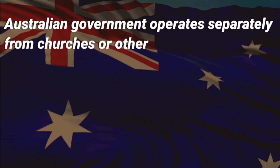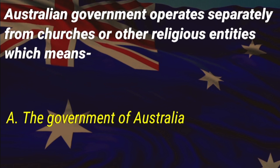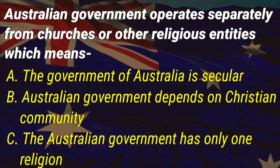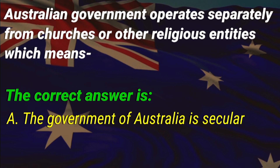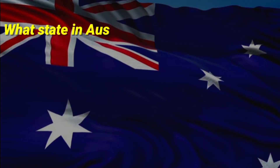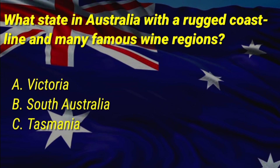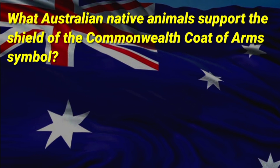The Australian government operates separately from churches or other religious entities, which means what? A: the government of Australia is secular, B: the Australian government depends on the Christian community, C: the Australian government has only one religion. The correct answer is A, the government of Australia is secular. What state in Australia has a rugged coastline and many famous wine regions? The correct answer is B, South Australia.